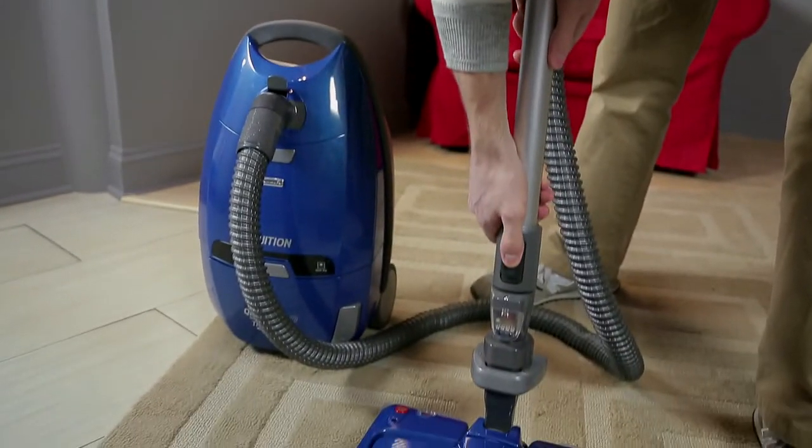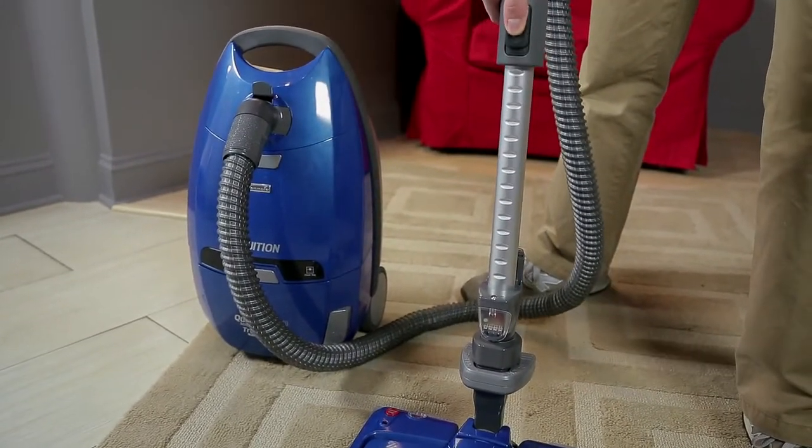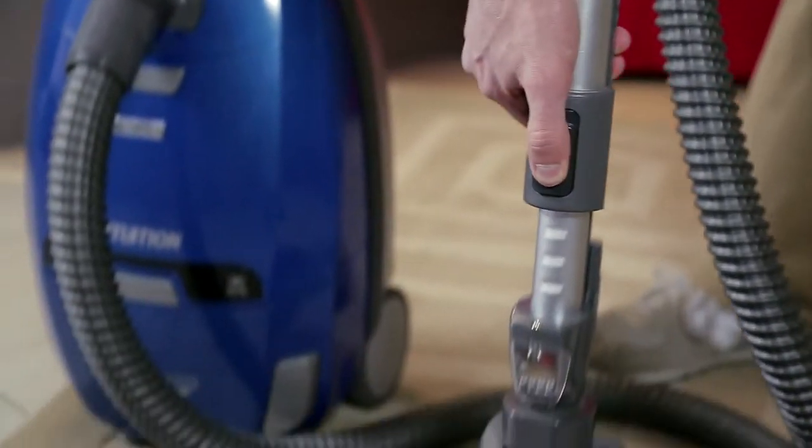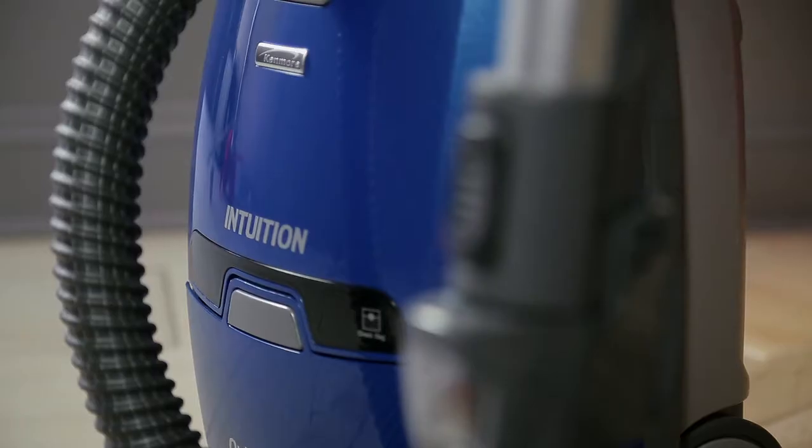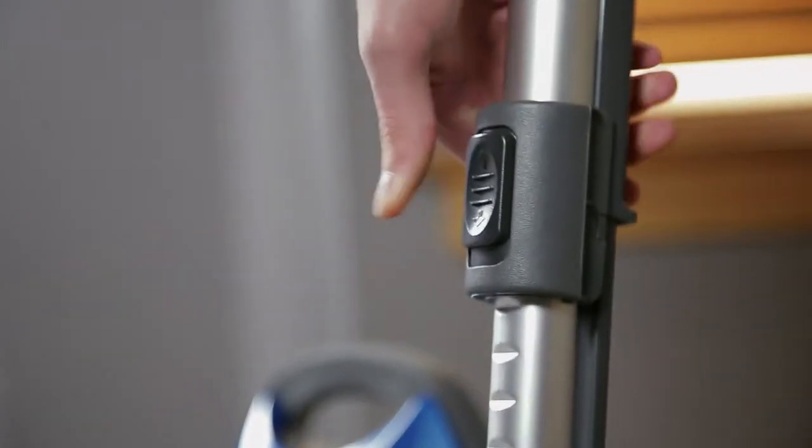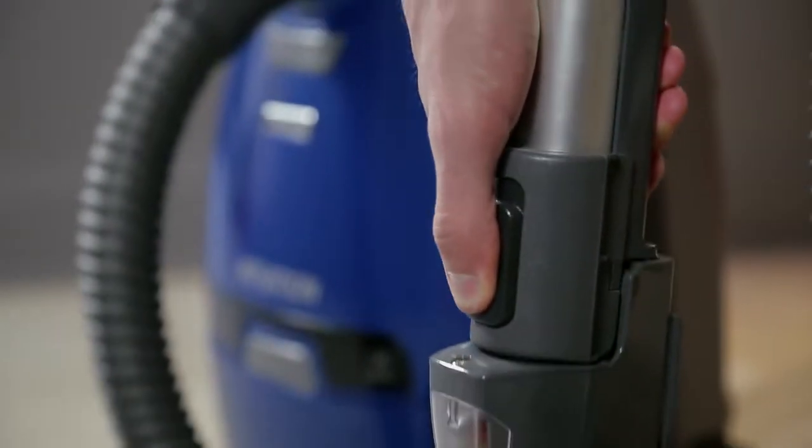The wand length is adjustable and requires no assembly. To adjust, simply push or pull the wand adjust button and slide the upper wand to the desired height. When adjusting the wand length, you may have to hold the Powermate with your hand or foot.